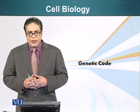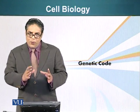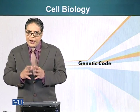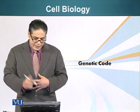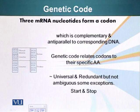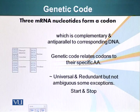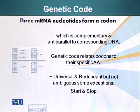Now let's talk about the genetic code. This is basically the code that translates the nucleotide information into the protein or amino acid information. There are three messenger RNA nucleotides that form a codon. These three nucleotides basically imply which amino acid will be placed in a particular protein at that region. This genetic code is complementary and anti-parallel to corresponding DNA. Genetic code is basically the sequence of nucleotides of messenger RNA.